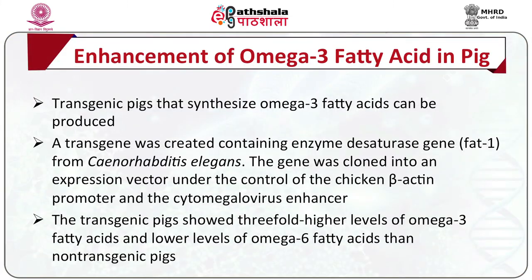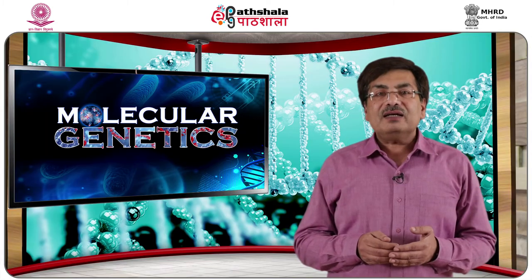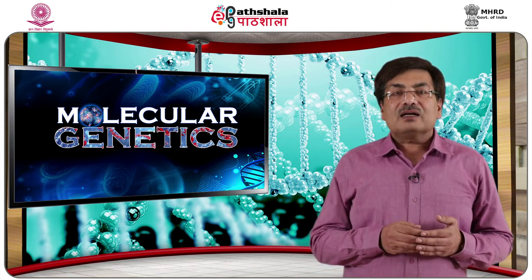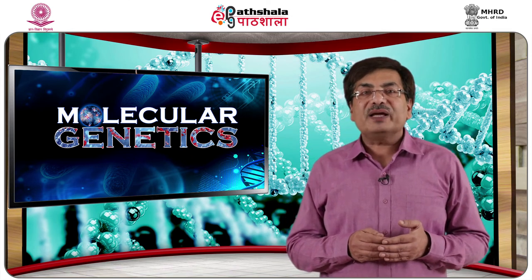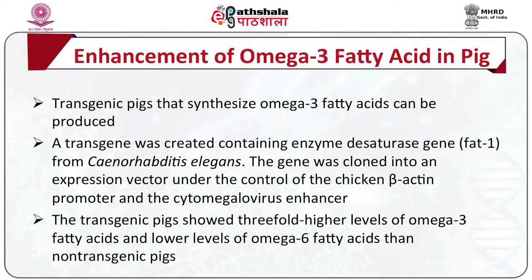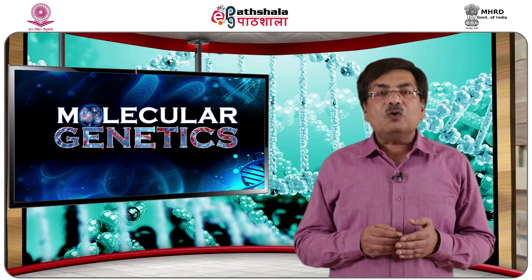The roundworm Caenorhabditis elegans produces an enzyme desaturase that converts omega-6 fatty acids to omega-3 fatty acids. A transgene was created containing the desaturase gene (fat gene) from C. elegans, cloned into an expression vector. Fetal pig fibroblasts were transfected, cultured, and cells producing higher levels of omega-3 fatty acids were used to produce transgenic pigs by nuclear transfer. The transgenic pigs showed a threefold higher level of omega-3 fatty acids and 23% lower level of omega-6 fatty acids than non-transgenic pigs.